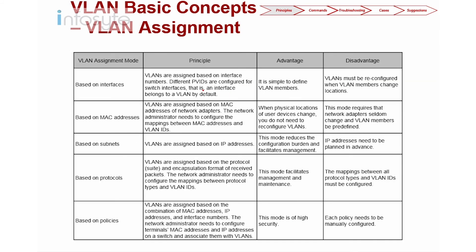In Huawei, there are multiple ways to assign VLANs. The first and most common is interface-based: VLANs are assigned based on interface number using different PVIDs configured for switch interfaces. The PVID is the ID attached to the interface. It is simple to define, but VLAN must be reconfigured when a VLAN member changes location — that is the disadvantage.